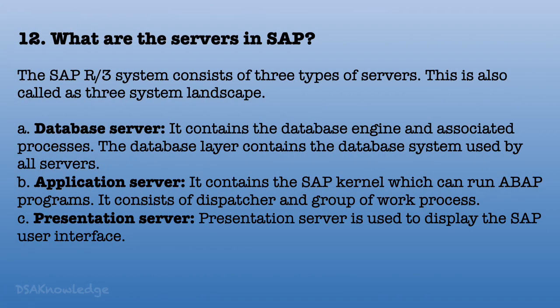What are the servers in SAP? The SAP R/3 system consists of three types of servers, also called the three-system landscape. Database server: contains the database engine and associated processes; the database layer contains the database system used by all servers. Application server: contains the SAP kernel which can run ABAP programs and consists of the dispatcher and a group of work processes. Presentation server: used to display the SAP user interface.